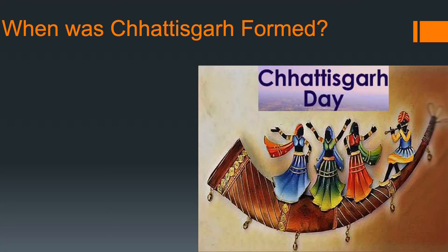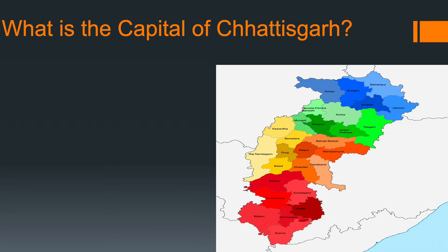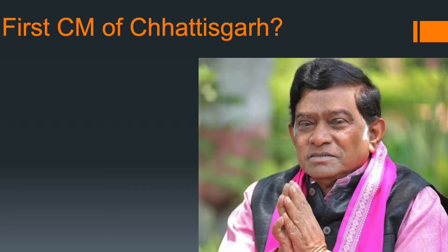First question: when was Chhattisgarh formed? Answer: 1st November 2000. Second question: what is the capital of Chhattisgarh? Answer: Raipur.